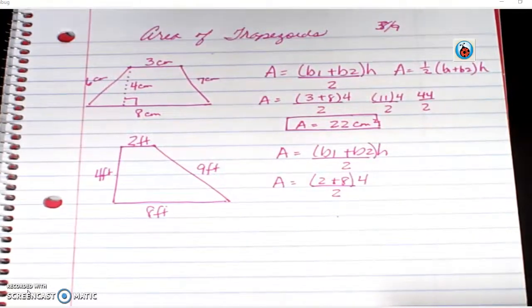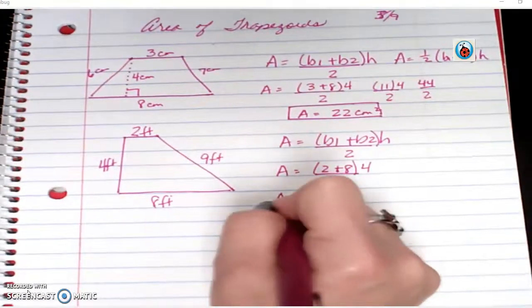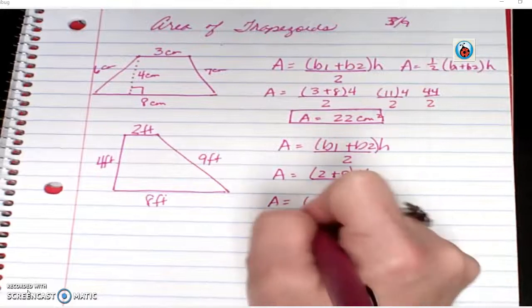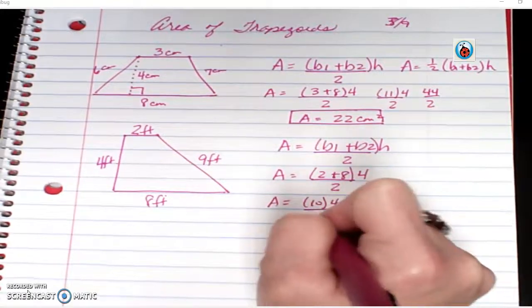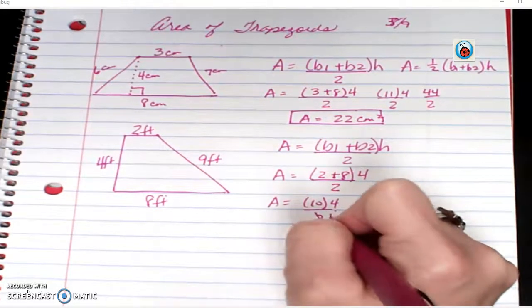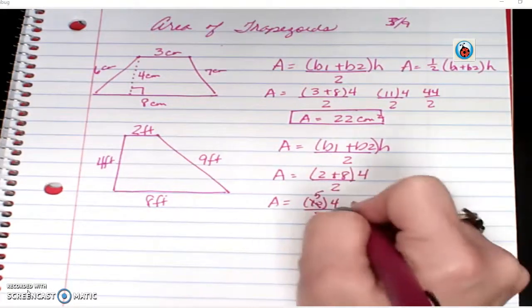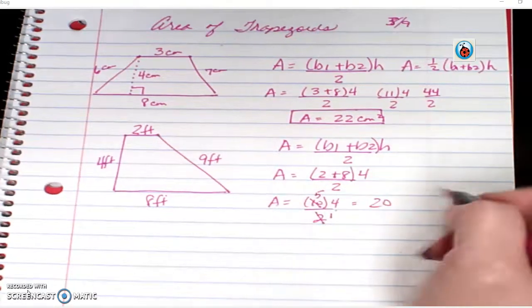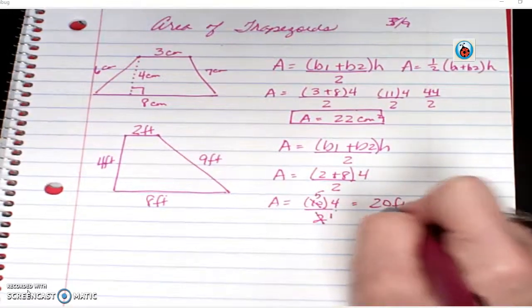And I'm dividing by 2. So the area is 4 plus 8 is 10 times 4 divided by 2. So I could say 2 goes in here once, 2 goes in there 5 times. And 5 times 4 is 20, so 20 feet squared.